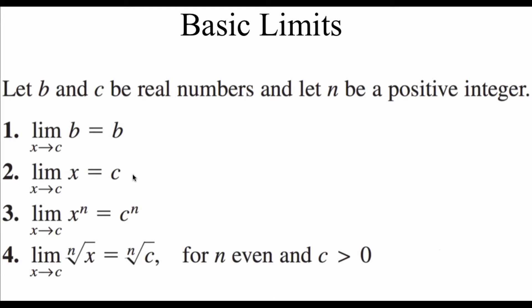For number 2, we've got an identity function, so just a plain x. The limit of x as x approaches c is just going to be whatever c number we're approaching. If we take that identity function and raise it to a power n, then its limit as x approaches c is just going to be whatever our c number is raised to that nth power.